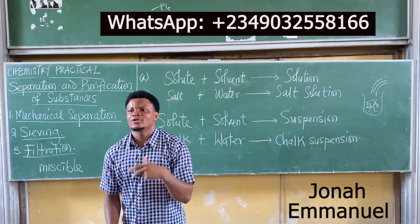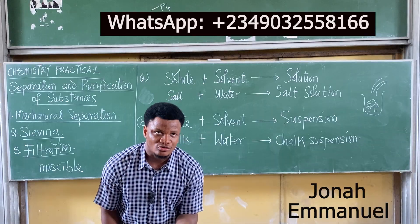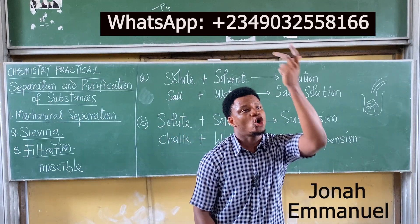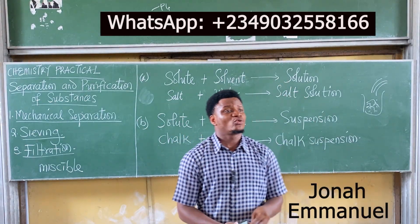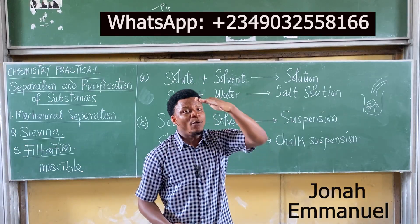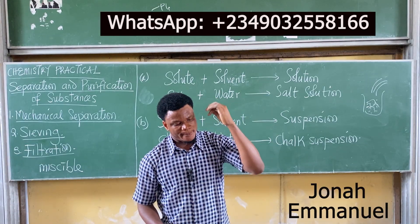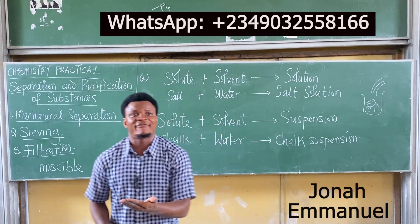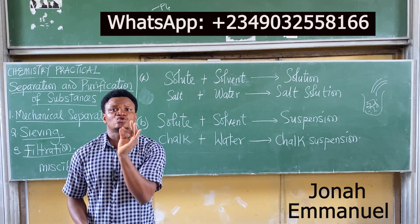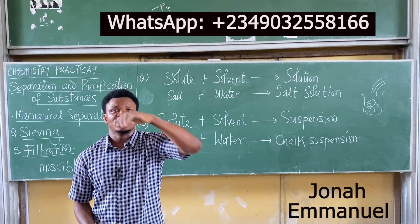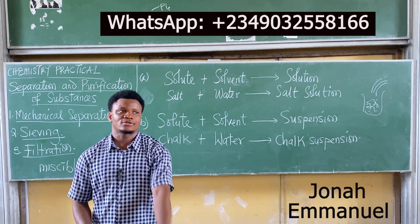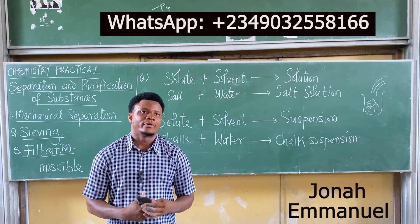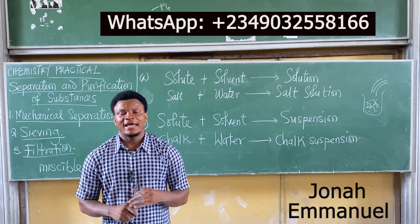By passing the mixture of salt, sand, and water through filter paper, the sand is left behind while the salt and water pass through. But I still need to get the salt — what do I do? Evaporation. Heat the salt solution. When you heat it, the water molecules evaporate, leaving you with salt. That's how you separate them.